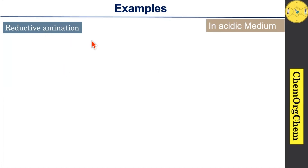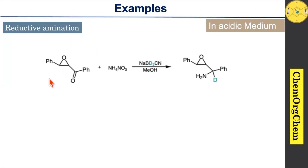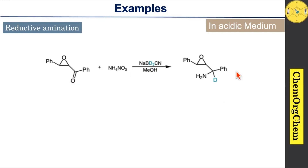Here is one of the interesting examples of chemoselective reduction. When you take this compound with ammonium nitrate and sodium cyanoborohydride, it selectively reduces the imine formed in situ by the reaction between this compound and ammonium nitrate, giving the corresponding product. Here you see that the epoxide ring is unaffected under these conditions.